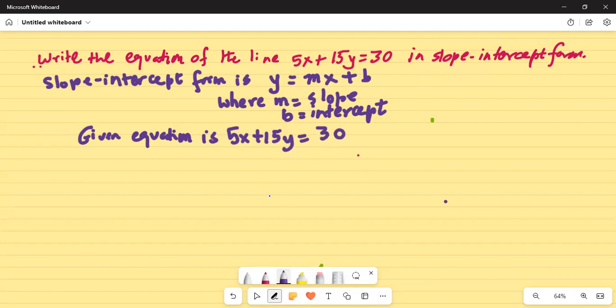First, we will separate the variables by keeping y on the left-hand side and removing x from the left-hand side. There is nothing in front of 5x, meaning it is positive. The opposite of positive is negative. Since this is an equation, what we do on the left-hand side, we have to do on the right-hand side.